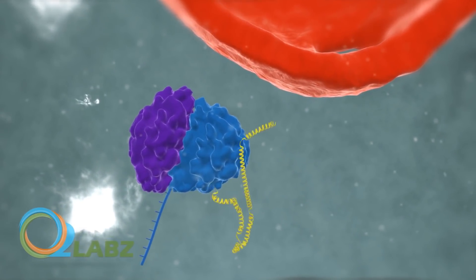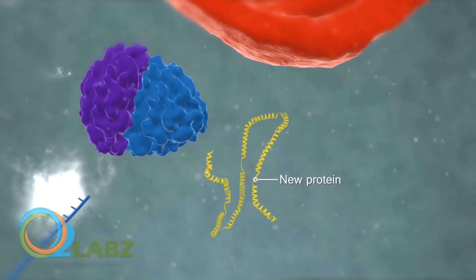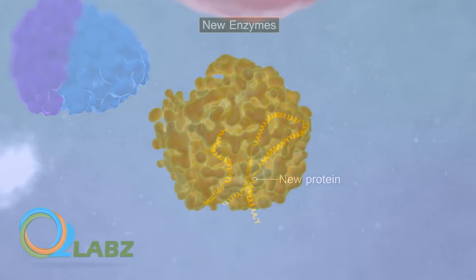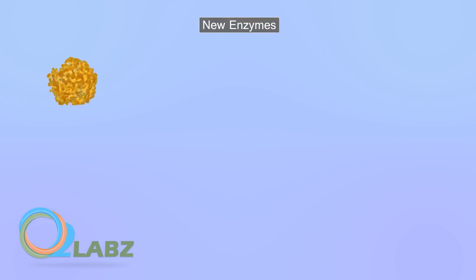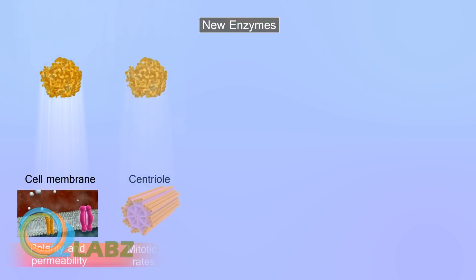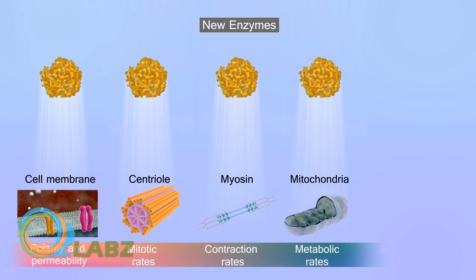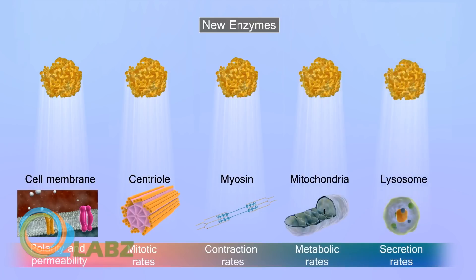This results in the synthesis of new proteins. The new proteins are often enzymes which alter the target cell's activity. They cause cellular responses that are unique to that hormone — everything from changing metabolic or contraction rates to the synthesis of other chemicals, including hormones, may be altered under the influence of a hydrophobic hormone.